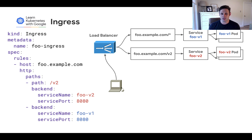And if the URL has a /v2 path, then the traffic will be sent to the foo v2 service. Otherwise, the rest of the traffic will be sent to the foo v1 service.